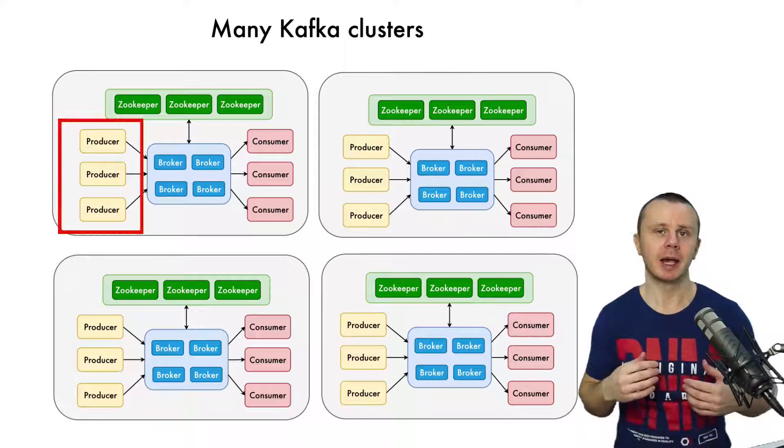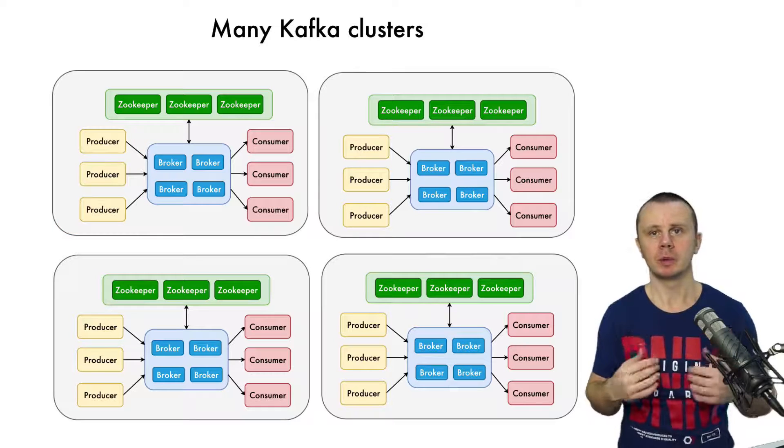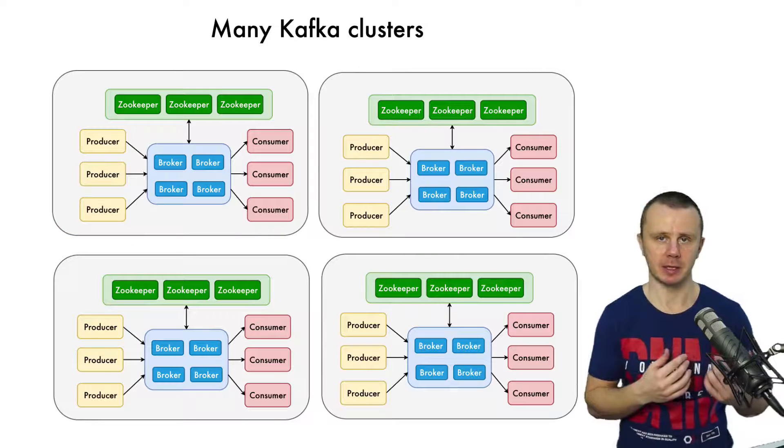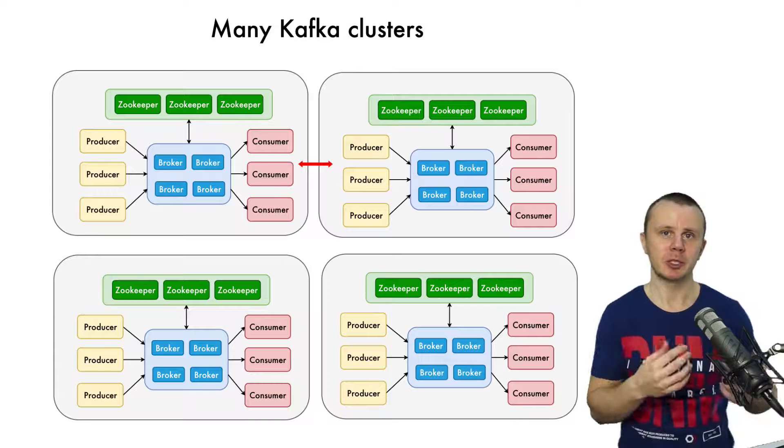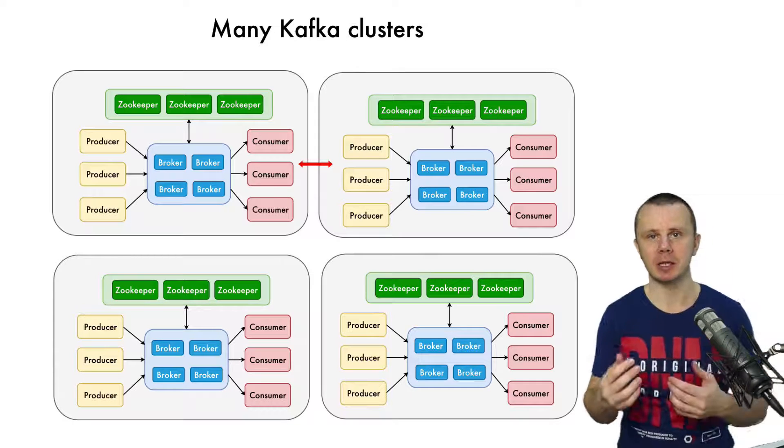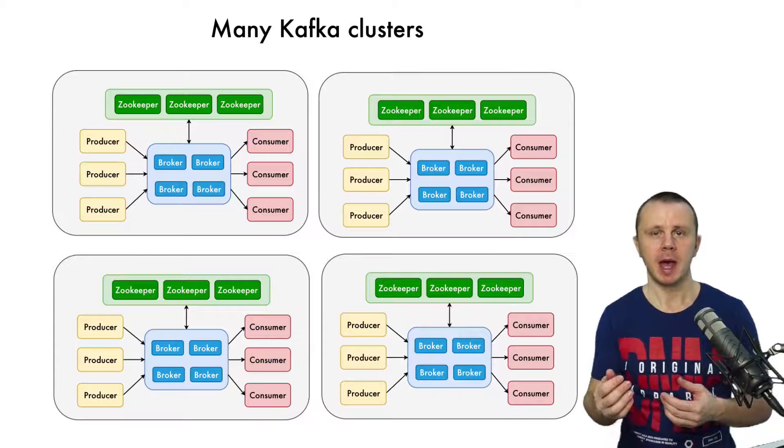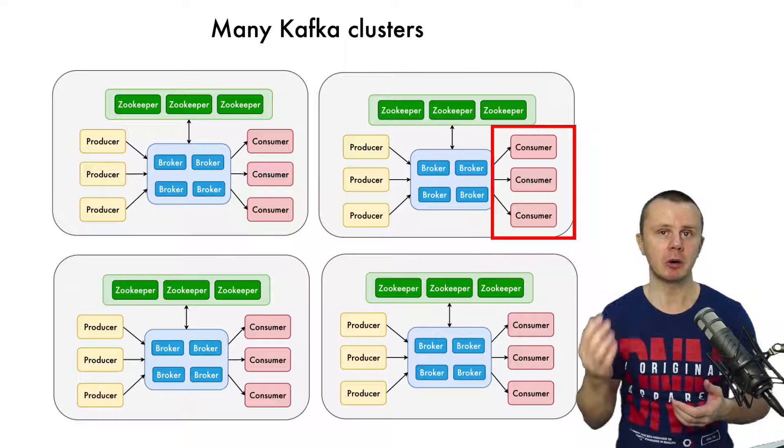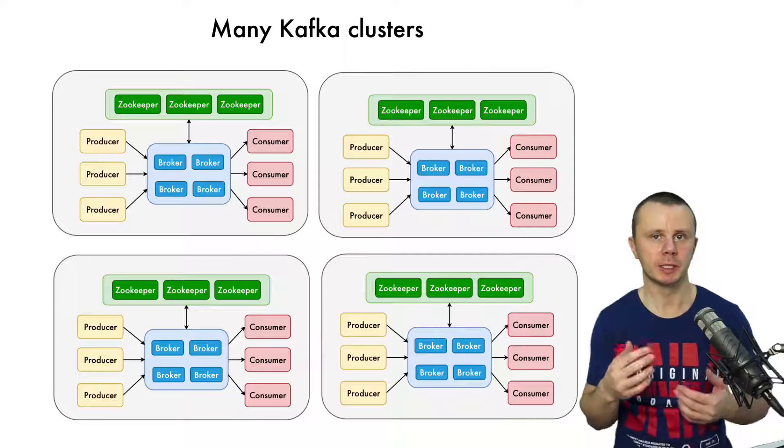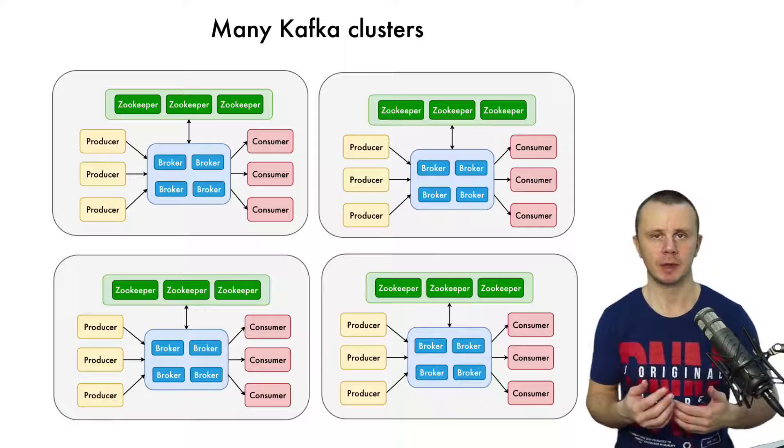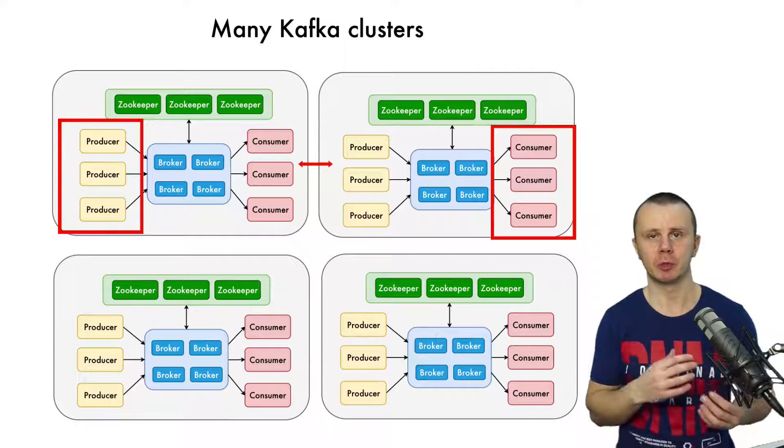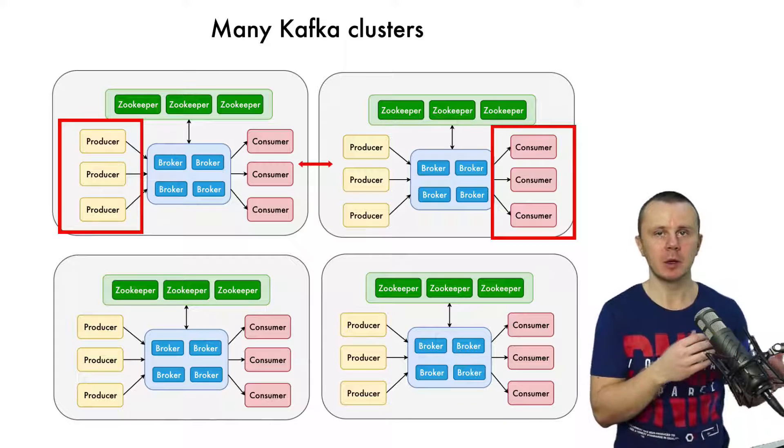Afterwards, those messages will be synced with the cluster located in Europe. And if there is some consumer located in Europe, it will connect to the closest cluster located in Europe. And in such case, a message that was produced in one cluster will be read in another cluster thanks to mirroring between two different clusters.